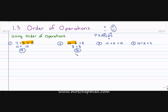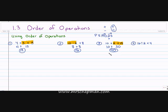On to number three. No parentheses, no exponents. I have ten plus two times fifteen — addition and multiplication. According to order of operations, I do multiplication first: two times fifteen is thirty. Bring down what I haven't solved, and ten plus thirty is forty.